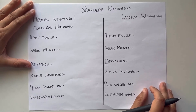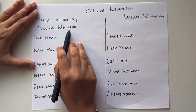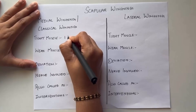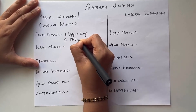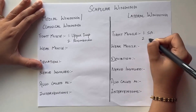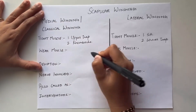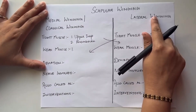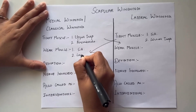Let's revise scapular winging together. We have two types of scapular winging: the medial winging, which is also called the classical winging, and the lateral winging. For medial winging, the tight muscles are the upper trap and the rhomboids, whereas for lateral winging the tight muscles are the serratus anterior and the lower trap. The weak muscles for medial winging are just the reverse — the serratus anterior and the lower traps.